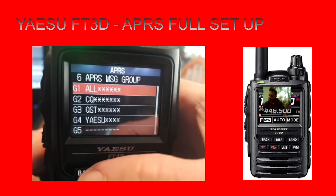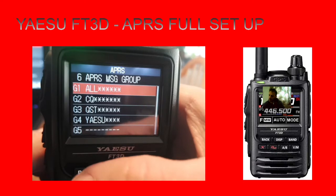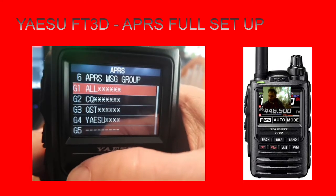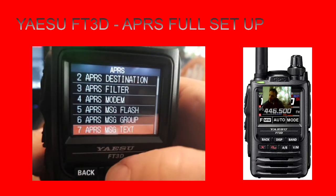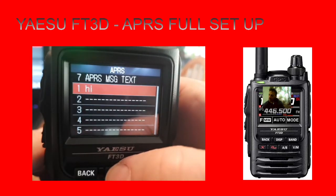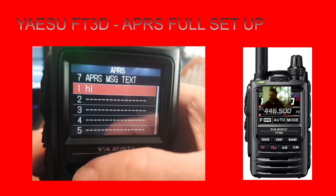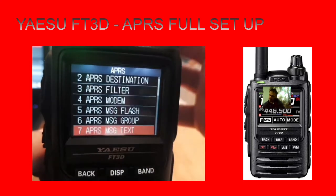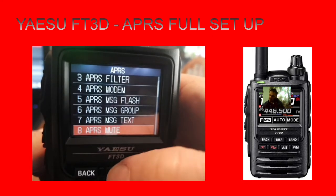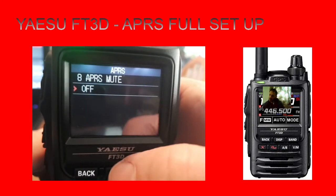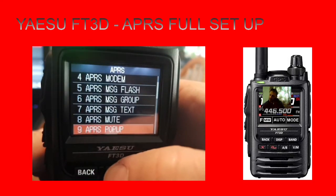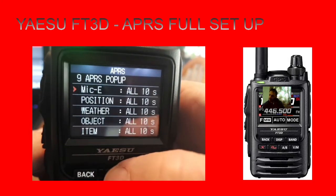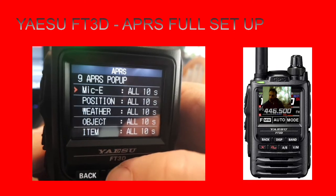APRS Message Group is at default settings. APRS Message Text - I've got a message in there that says 'Hi'. APRS Mute - if you don't want to hear all the noises you can turn mute on. APRS Pop-up - you can pick and choose what you see.